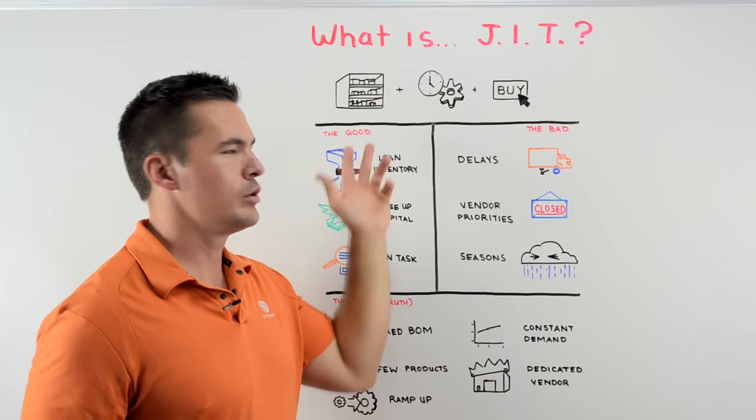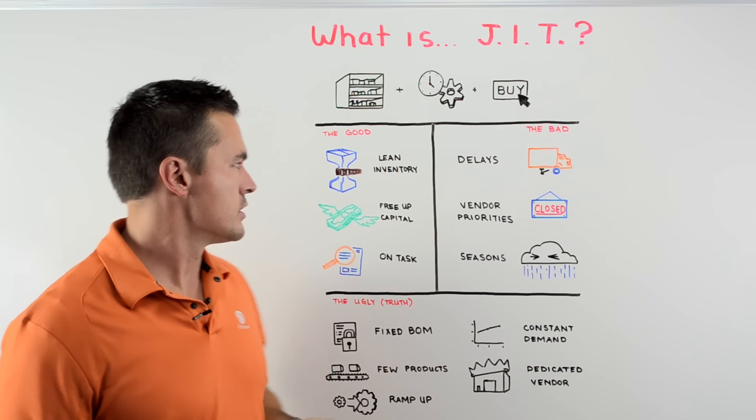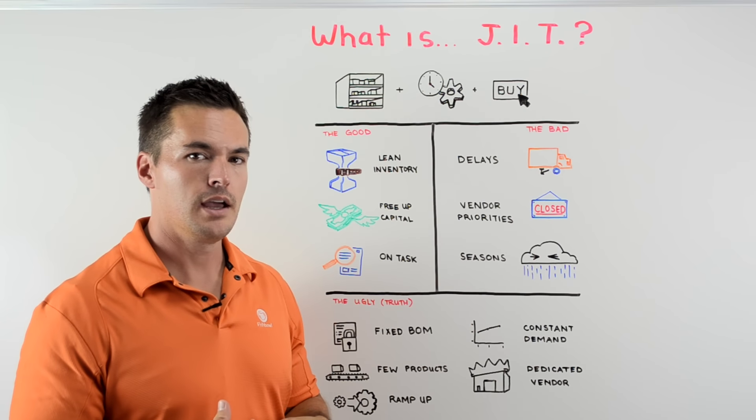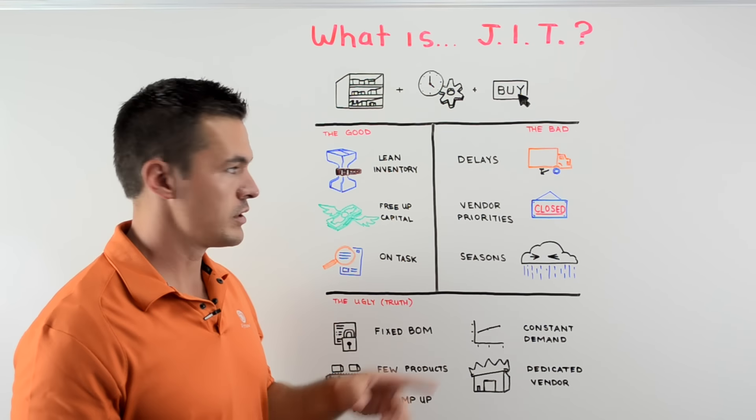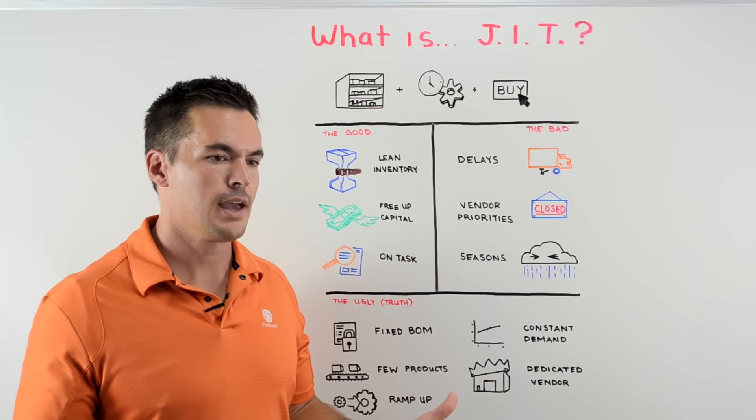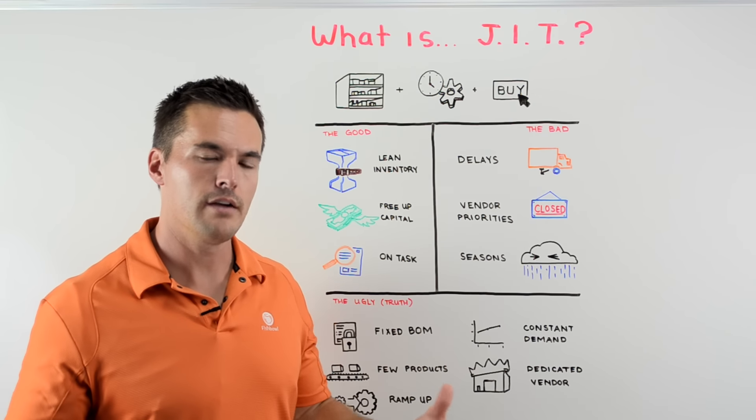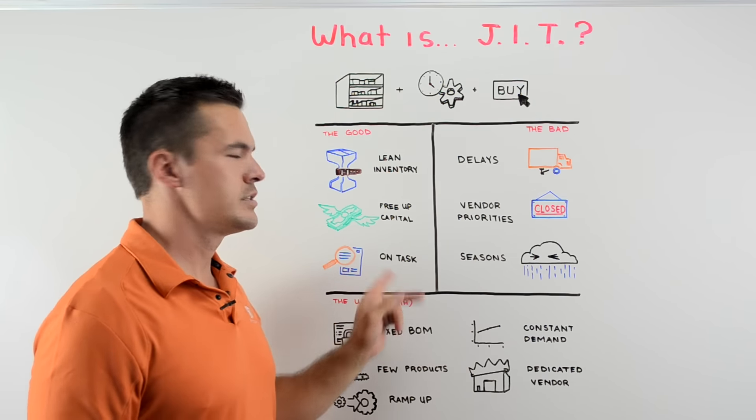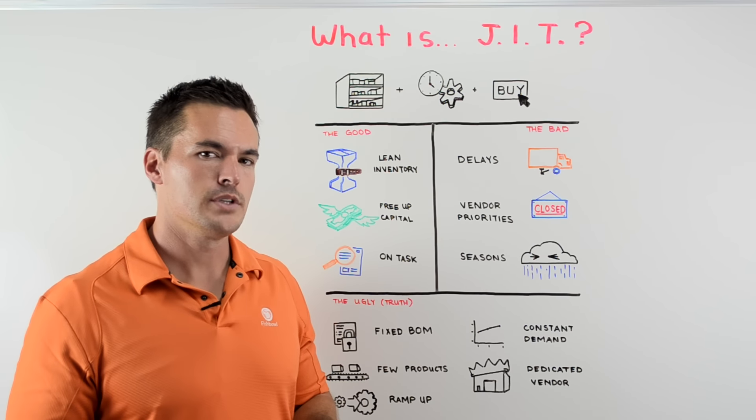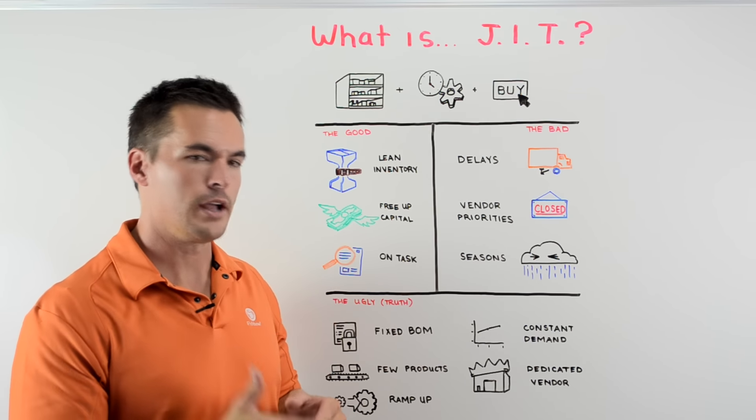So what is the good part of that process? Well, it makes for a lean inventory. You're not keeping a bunch of items on hand and wasting money, which also leads to freeing up capital. You don't have a bunch of things sitting on your shelf, so you have capital to invest in other areas of your business. Plus, it keeps you on task. When you're making something, the moment that order comes in, you know what you're doing and why you're doing it.